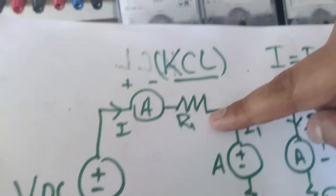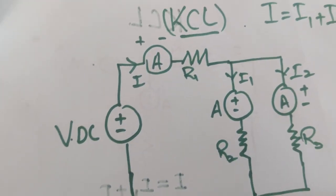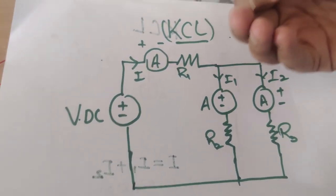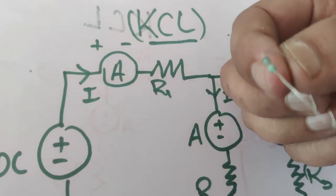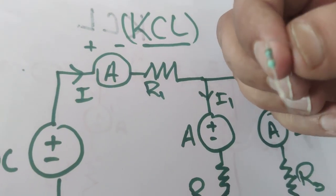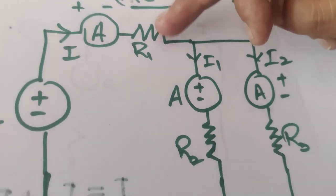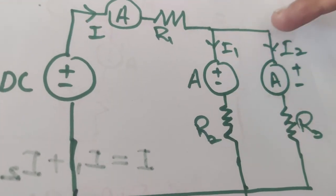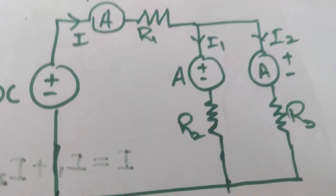We have resistances — I am using carbon resistors here. You can measure resistors using a multimeter or by color coding. I have three resistors and three ammeters, labeled ammeter one, two, and three.